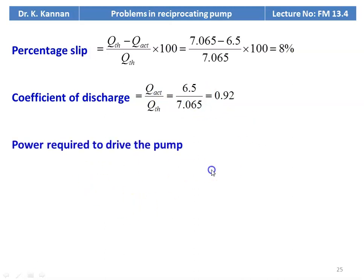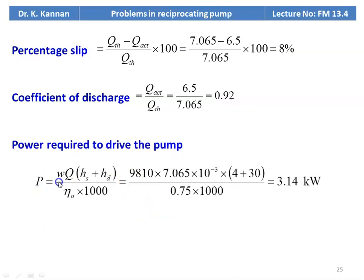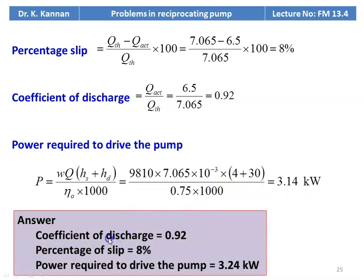The power required to drive the pump: P = W × Q × (suction head + delivery head) / (overall efficiency × 1000). Substituting: 9810 × 7.065 × 10⁻³ × (4 + 30) / (0.75 × 1000) = 3.14 kilowatt. So the answers: coefficient of discharge = 0.92, percentage of slip = 8%, power required to drive the pump = 3.24 kilowatts.